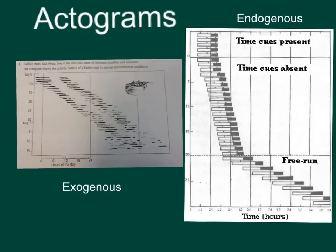If it is exogenous, the pattern of activity will shift over time until it enters the free-running period. If it is an endogenous one, the same patterns of activity will continue even without external cues.